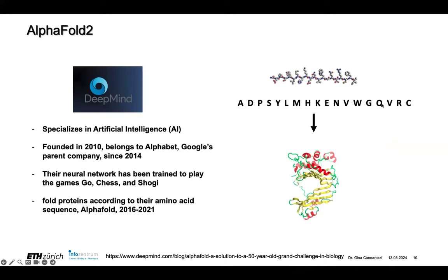AlphaFold2 came along and they do very, very good predictions of the structure from the sequence. AlphaFold2 is a product of DeepMind — a company that specializes in artificial intelligence. They were founded in 2010, bought by Alphabet, which is Google's parent company, in 2014, and they started off with classical problems in computer science: playing Go, chess, and Shogi.